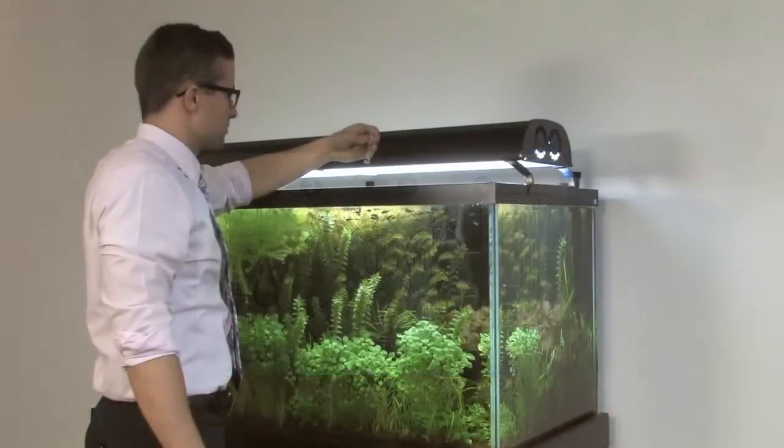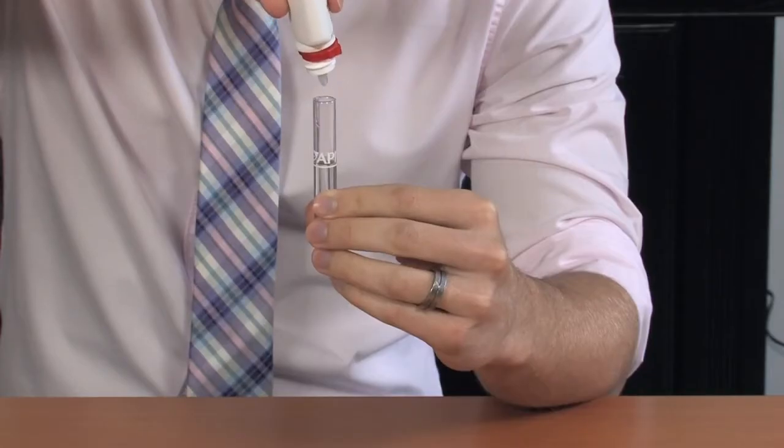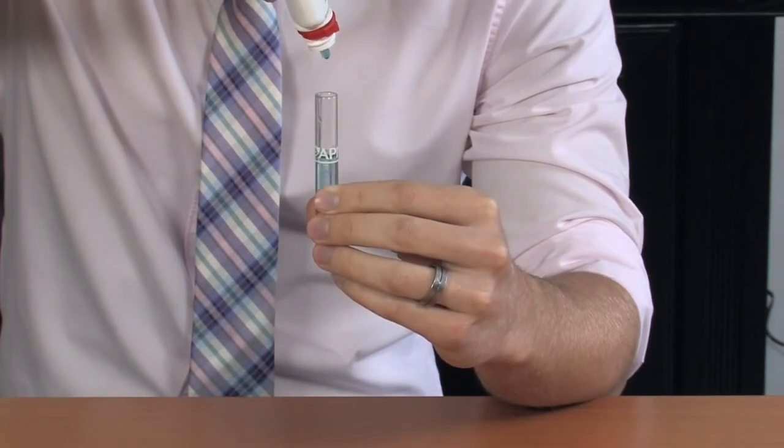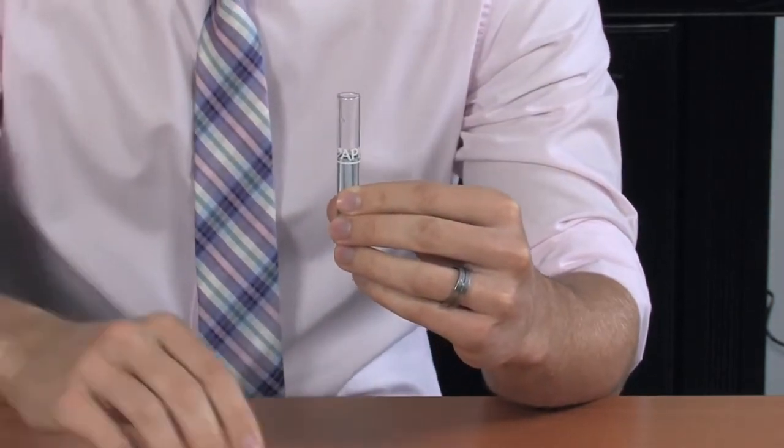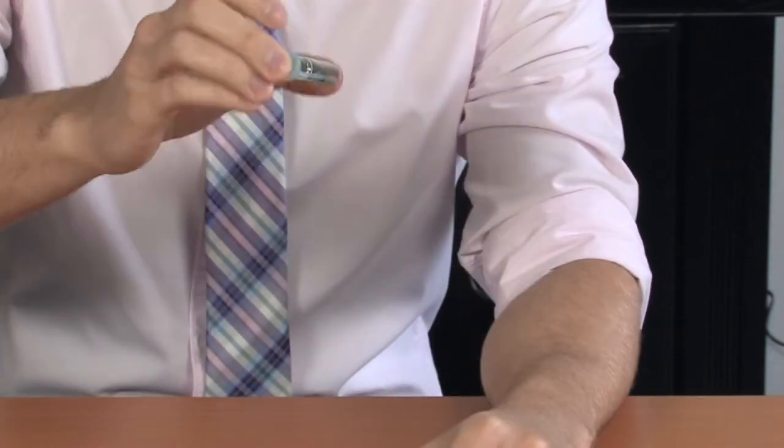Begin the test by taking a water sample from the aquarium. Fill the test tube to the line. Holding the bottle of test solution in an upright position, add five drops to the test tube. Be sure to cap the test tube and then shake the tube for a few seconds to mix the solutions.